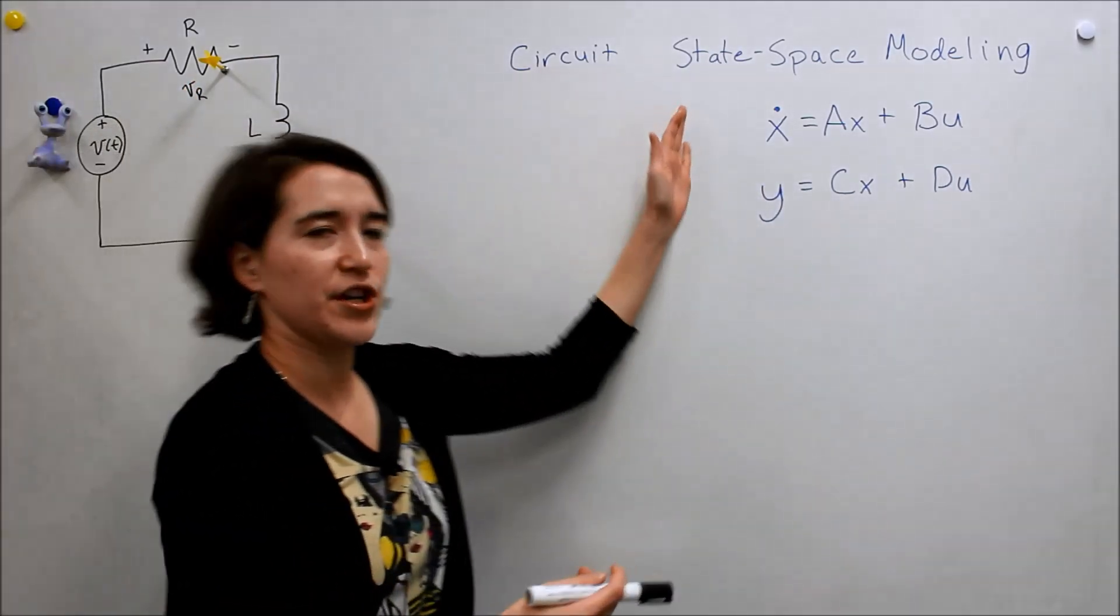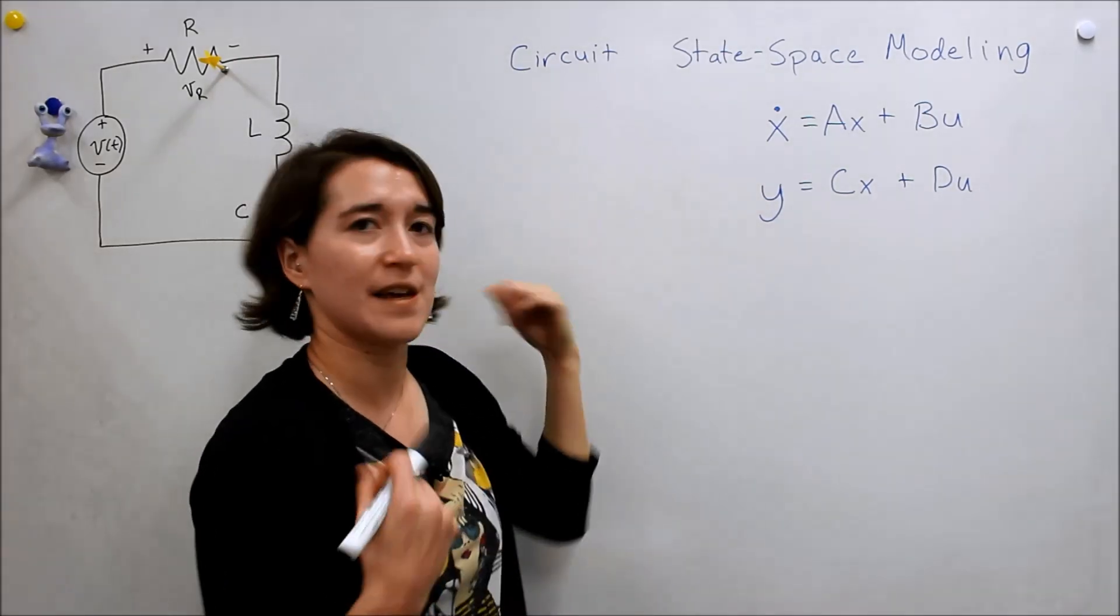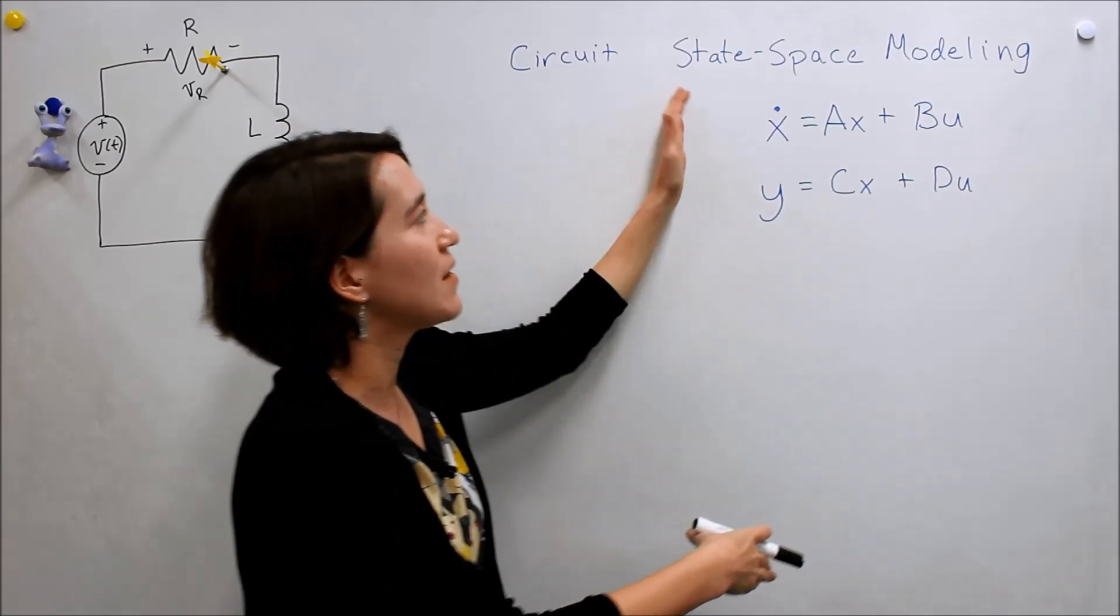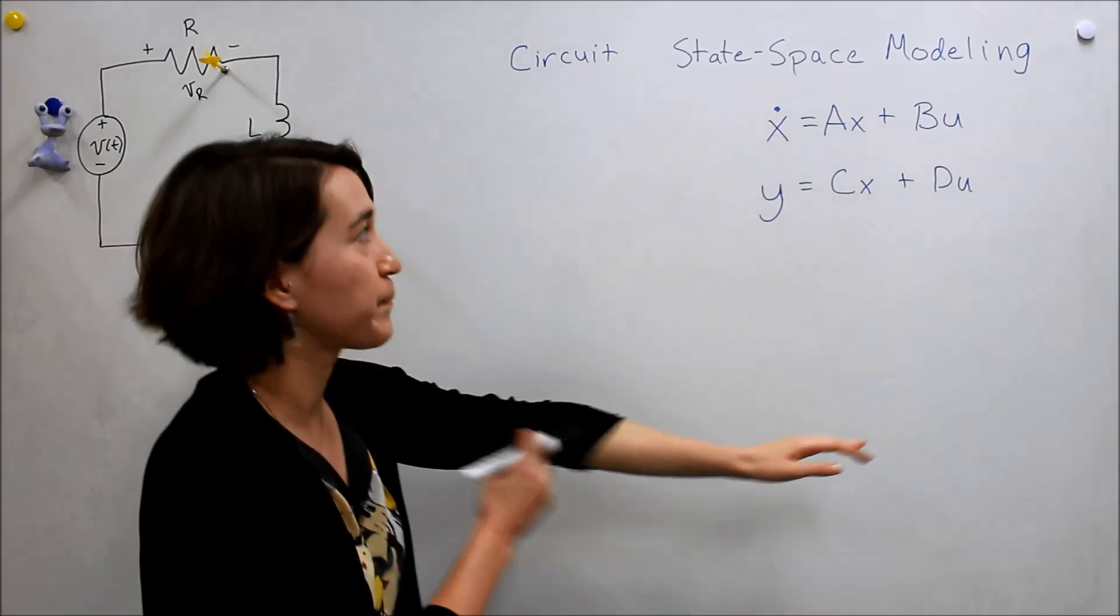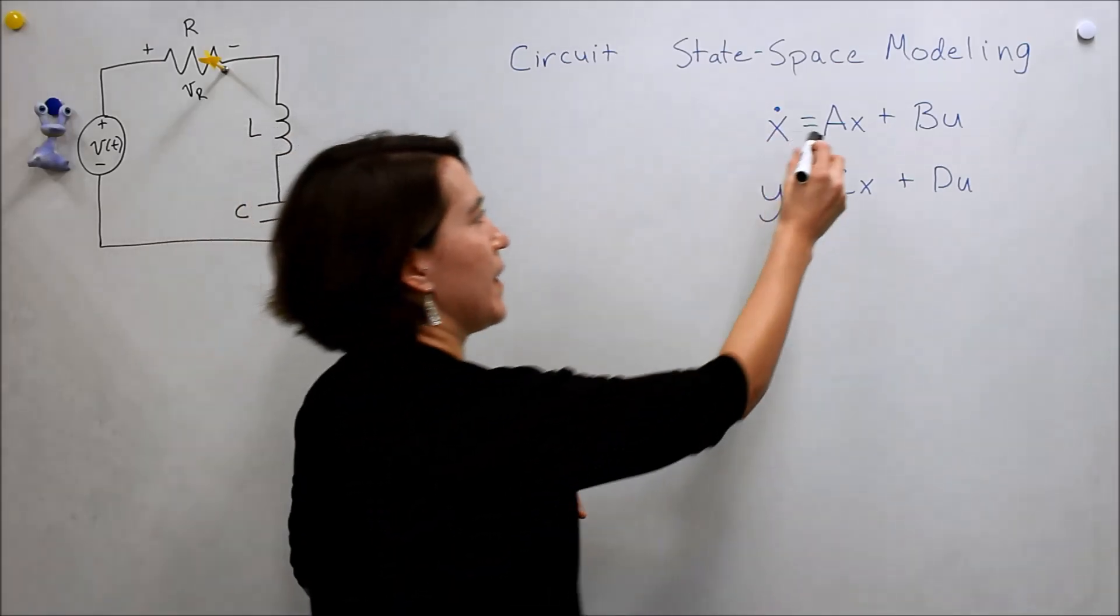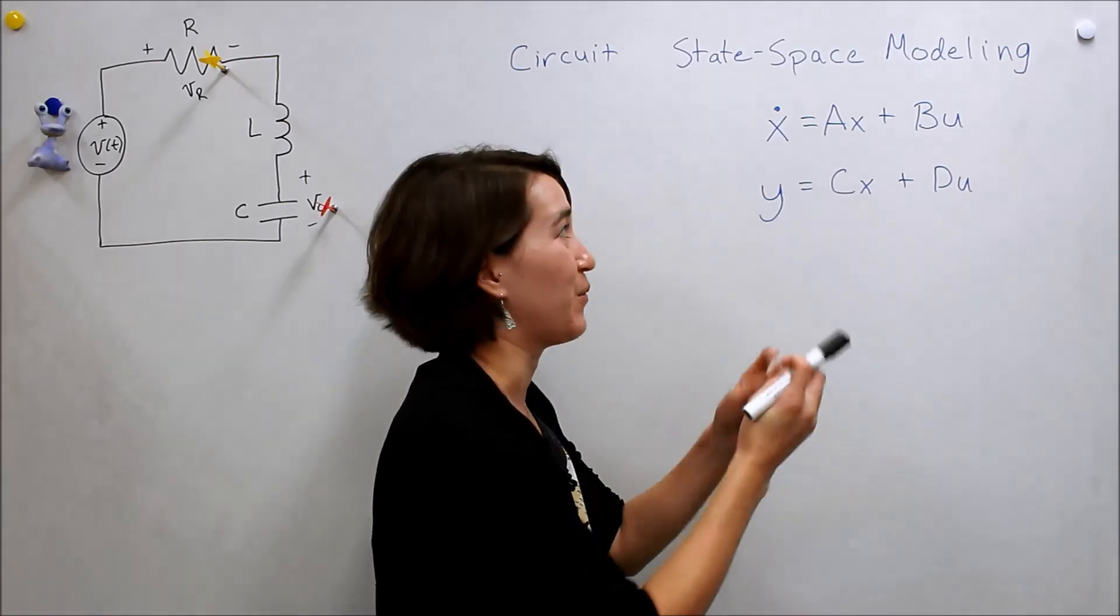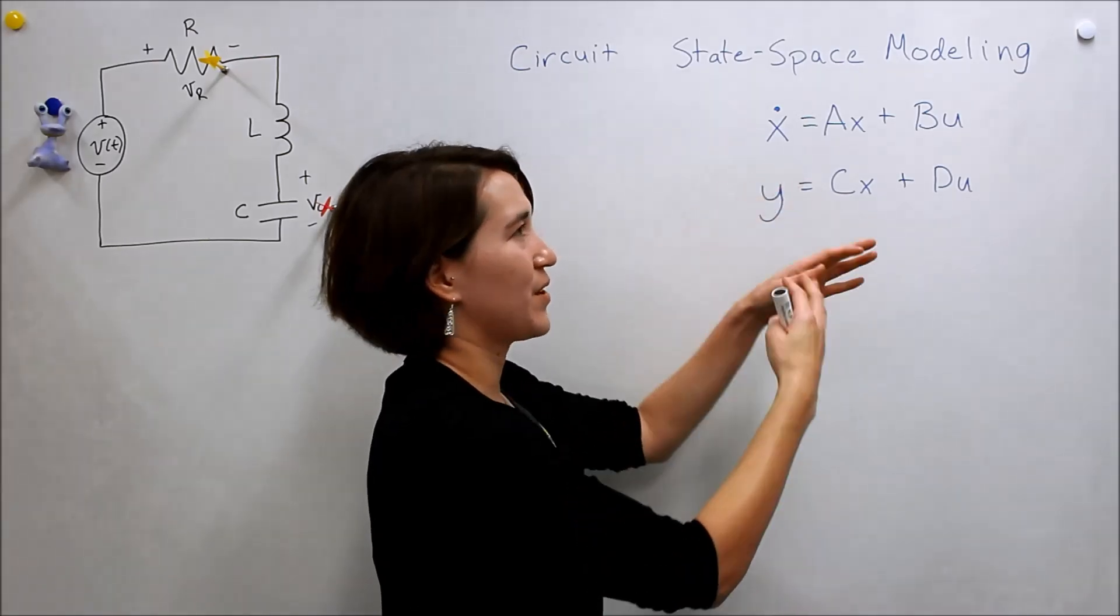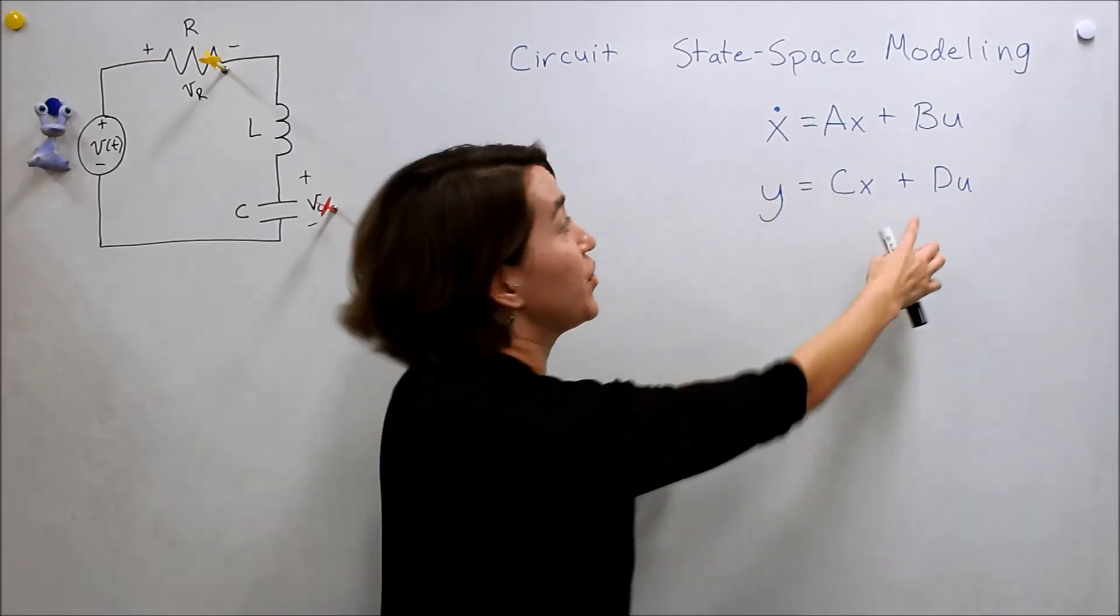Just to remind you, this is our standard form for state space modeling. If I say put it into state space form, it means you need to find A, B, C, D and write it in this form. As a reminder, A, B, C, D are all matrices, they might be one dimensional or 2 by 2, but they are matrices, and then X and Y and U are vectors.